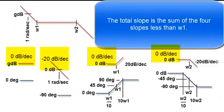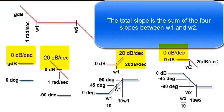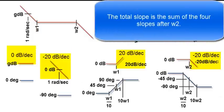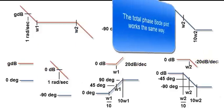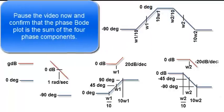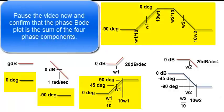The total slope is the sum of the four slopes less than Omega-1. The total slope is the sum of the four slopes between Omega-1 and Omega-2. The total slope is the sum of the four slopes after Omega-2. The total phase Bode plot works the same way. Pause the video now and confirm that the phase Bode plot is the plot of the sum of the four phase components.